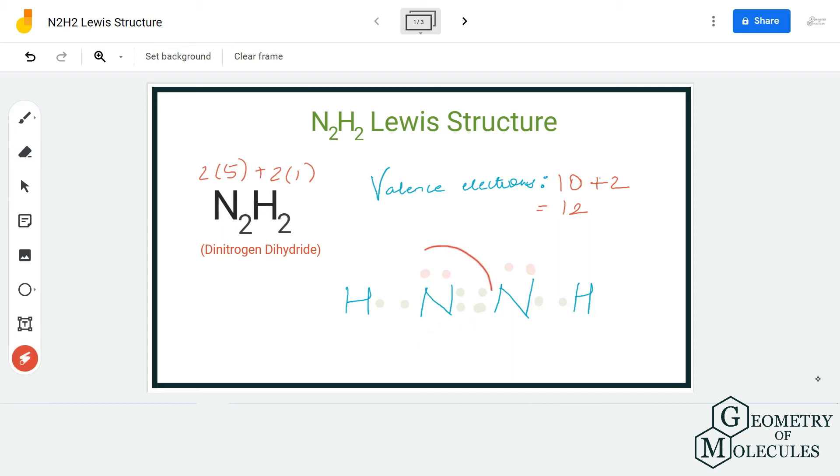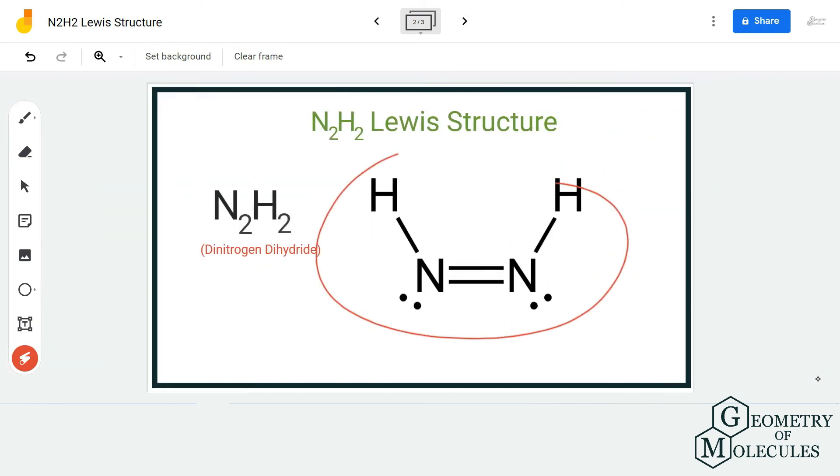Doing that, we will have eight valence electrons for both these nitrogen atoms. And hence, this is the accepted Lewis structure for N2H2, as all the atoms have complete octets and have a stable structure. I hope this video helps you to understand the Lewis structure of N2H2.